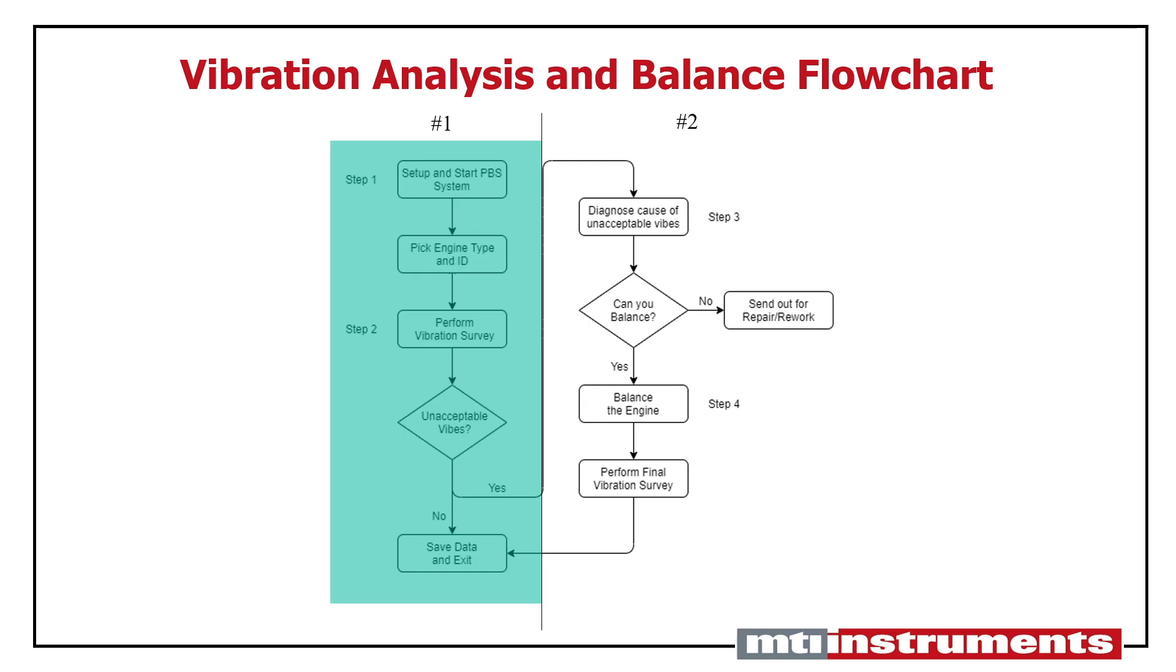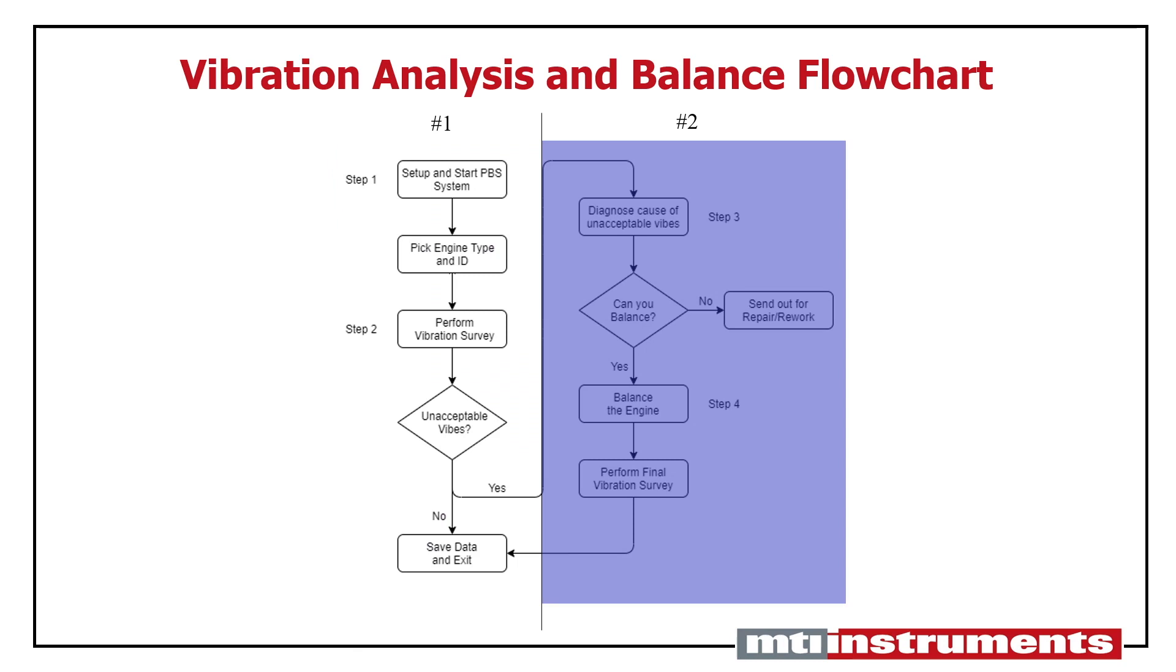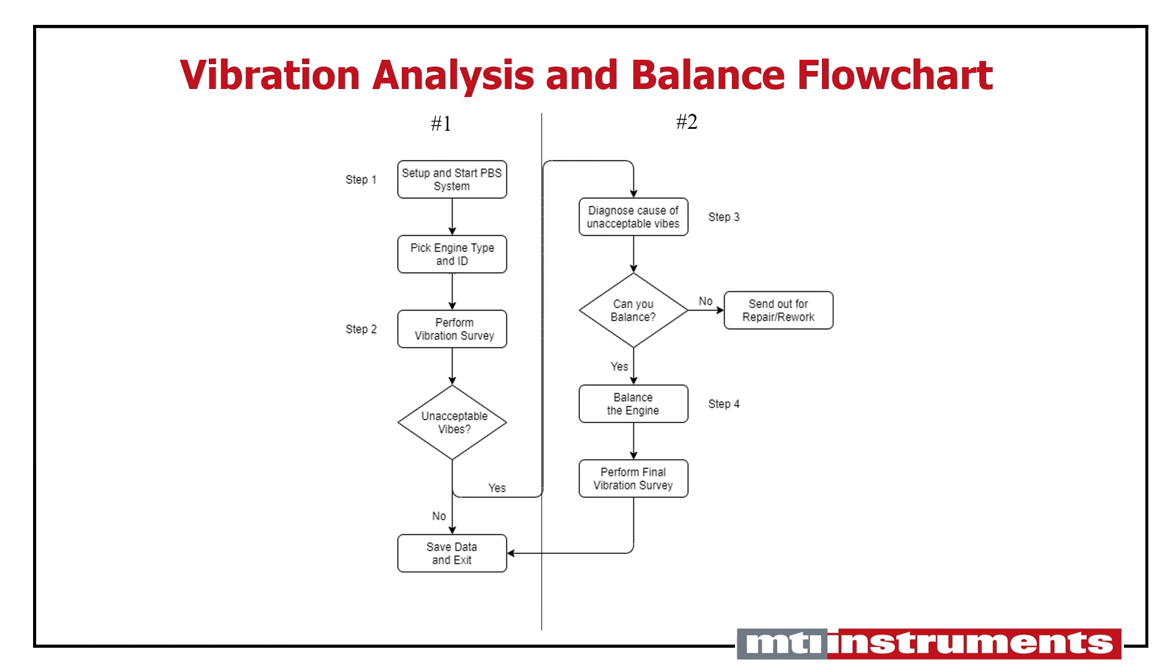The workflow on the left is used when completing a vibration analysis. The second workflow on the right side of the chart is used for balancing an engine. If you're using the PBS for preventative maintenance such as progressive maintenance plans, you'll likely not have to use the balancing or right-hand side of the workflow too often. If you only use your PBS to address known bad engines or engines that have recently received work that could change its balance, you'll likely use the balance portion more often.